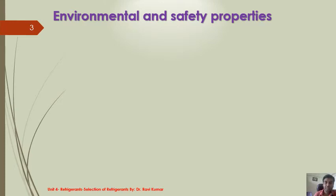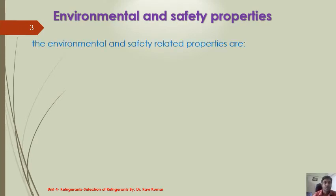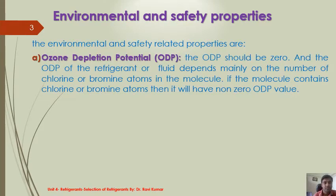Safety-related properties are very important. Now let us look at the environmental and safety properties. The first is ozone depletion potential — the ODP should be zero. The ozone depletion potential of the refrigerant depends mainly upon the number of chlorine or bromine atoms in the molecules. If the molecule contains chlorine or bromine atoms, it will have a non-zero ODP value.